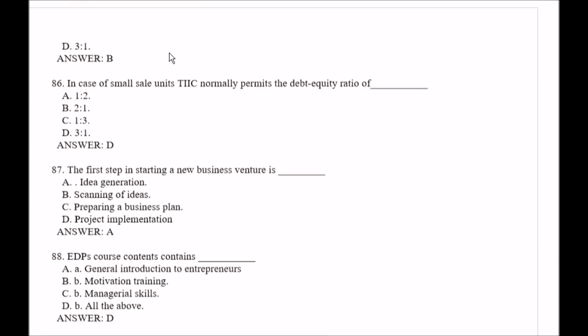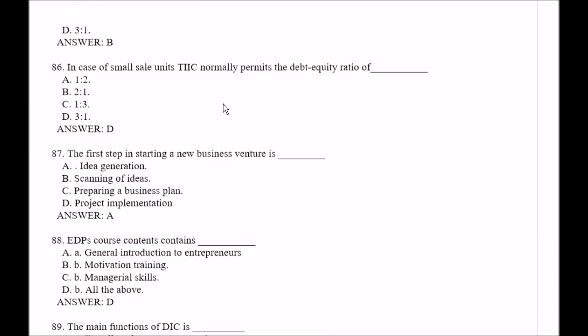Question number 86: In case of small scale units, TIIC normally permits the debt-equity ratio of — Option A, 1:2; Option B, 2:1; Option C, 1:3; Option D, 3:1. The right answer is Option D, that is 3:1.